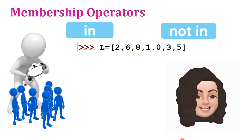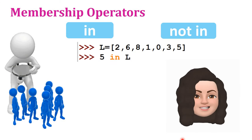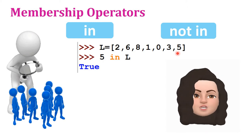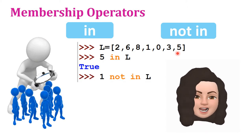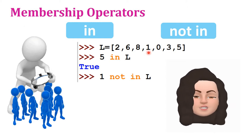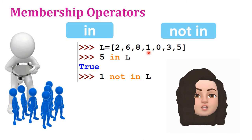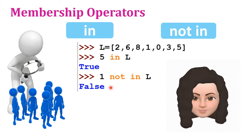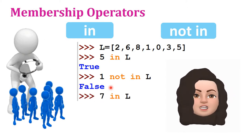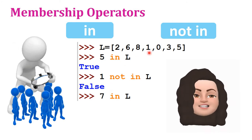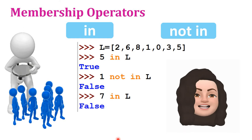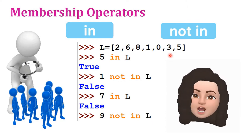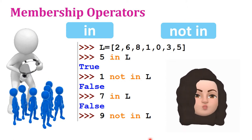Checking whether element 5 is present: '5 in L' returns true because 5 is present in the list. Next, '1 not in L' — element 1 is present in the list, so 'not in' returns false. '7 in L' — element 7 is not present, so 'in' returns false. '9 not in L' — 9 is not present in the list, so it returns true.